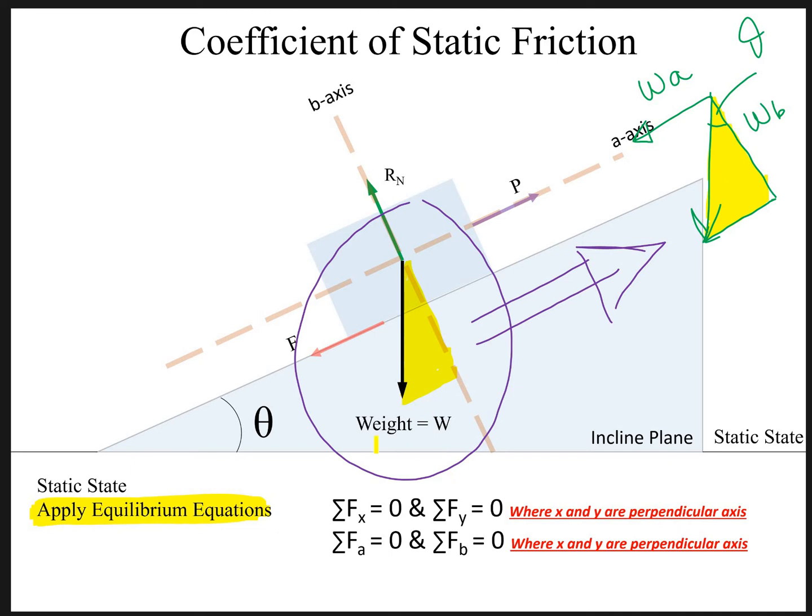So here what we'll do, we'll consider this W and we'll have to resolve it into its X and Y component and we'll be getting WA and WB. WB is the horizontal component which is equals to W into cosine of theta and WA will be its vertical component which is equals to W into sine of theta.